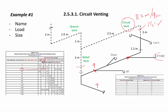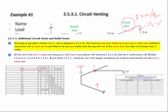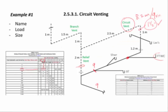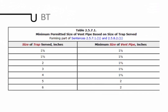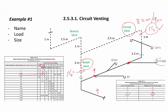Now let's size the relief vent. Article 2573 says the minimum permitted size of a relief vent can be up to one size smaller than the circuit vent — so initially inch and a quarter as one size smaller may be the relief vent size. However, the relief vent also needs to conform to table 2571 for the largest trap served. For a three inch water closet we need minimum inch and a half, so the relief vent — considered as serving the circuit — would need to be minimum inch and a half.